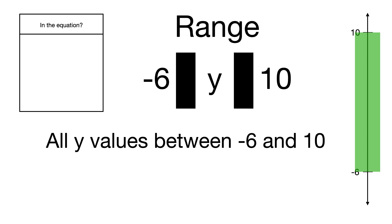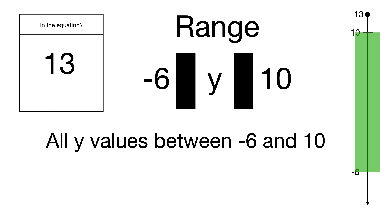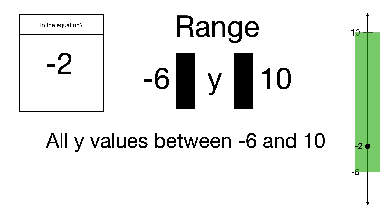Let's check values against this range of negative 6 to 10. The number 4 falls on the number line and is definitely included in the range. The number 13 is just a little outside, so no it's not included. The number negative 2 falls between negative 6 and positive 10, so yes it is included in the range.